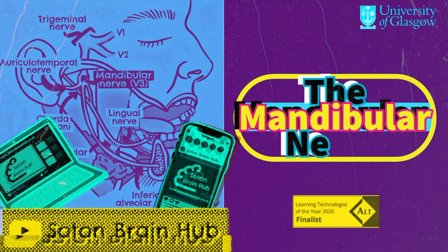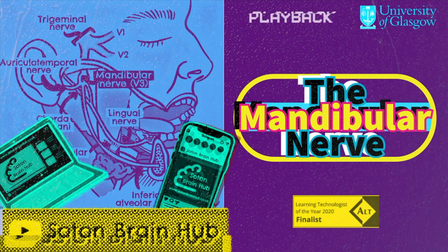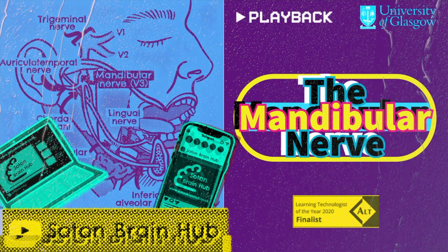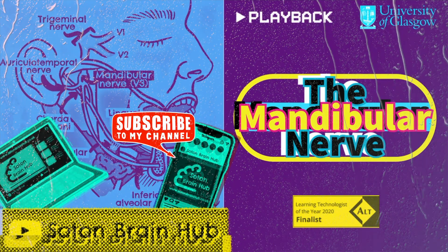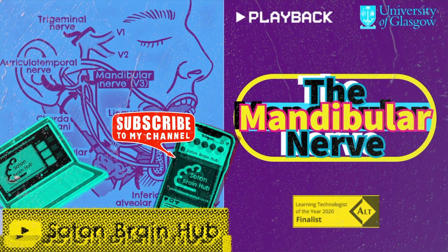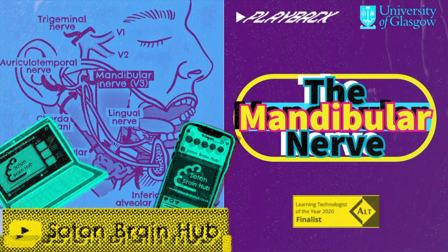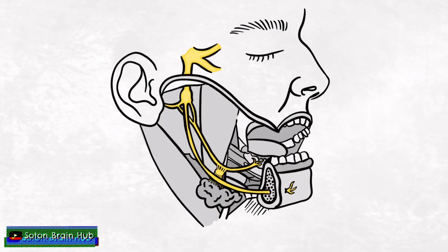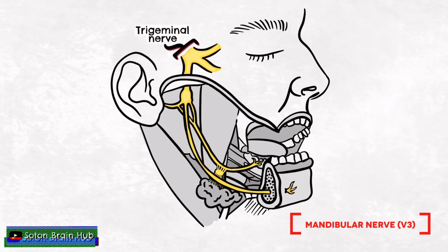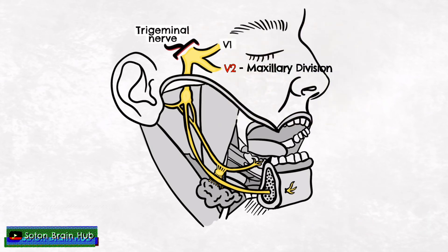Hello and welcome to another Sot & Brain Hub video. My name is Charlie and today I will take you through a review of the mandibular nerve. The mandibular nerve is a branch of the trigeminal nerve, which is the fifth cranial nerve. It is actually the third branch of the trigeminal nerve and comes after the maxillary and ophthalmic branches.